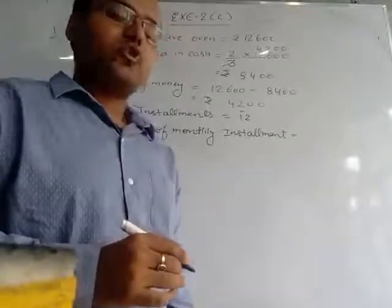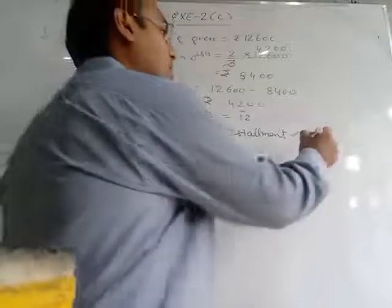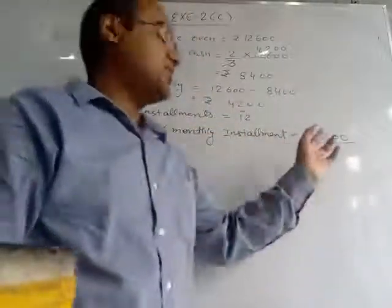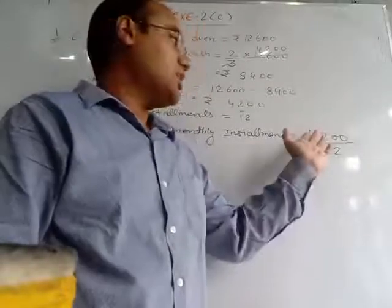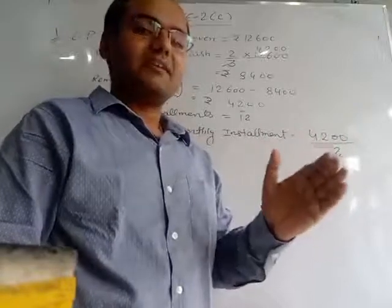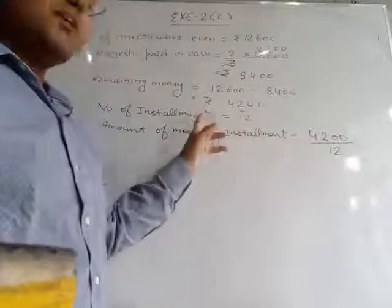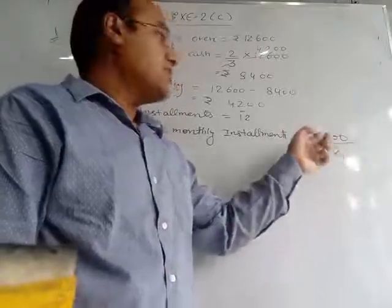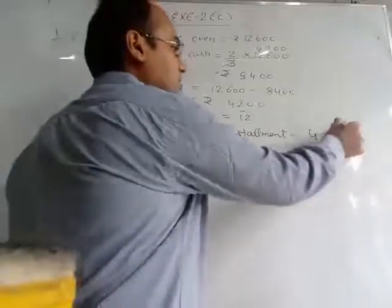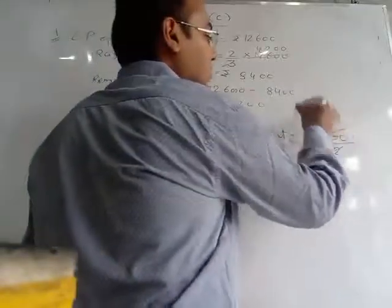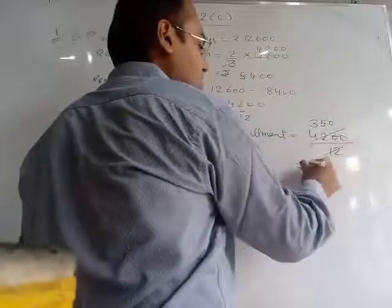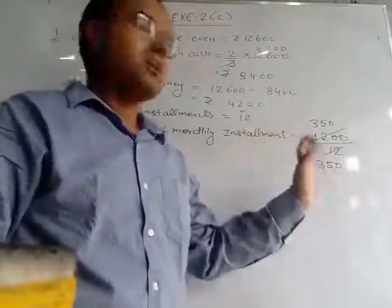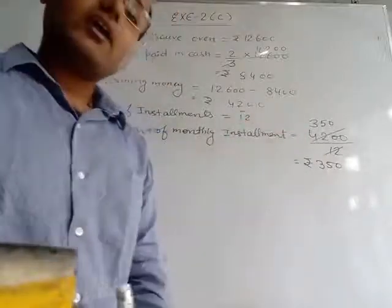We have to find the amount of monthly instalments. We divide the 4,200 rupees into 12 parts. This total remaining money he is giving in 12 monthly instalments — EMIs. So each instalment will be 4,200 divided by 12. Each monthly instalment is 350 rupees. He will give 350 rupees 12 times and his remaining balance will also get cleared. This is the final answer of question number 1.